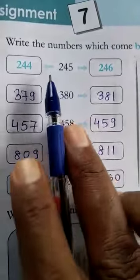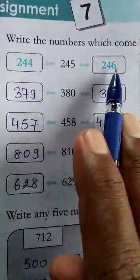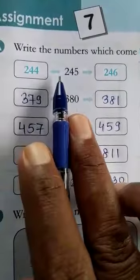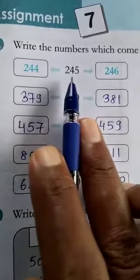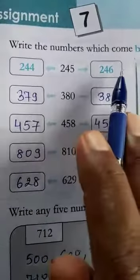So, 245 before number, 244 and after number, 246. So, 244 is the before of 245 and 246 is after 245.